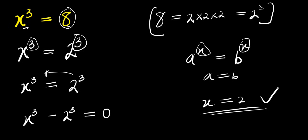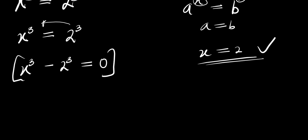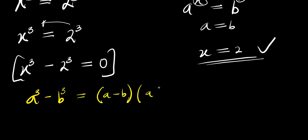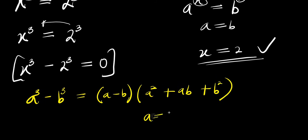Equals 0. So to solve this we are going to consider this identity: we have a power 3 minus b power 3. This equals a minus b times a squared plus ab plus b squared. In this case we have a equals x and b equals 2.